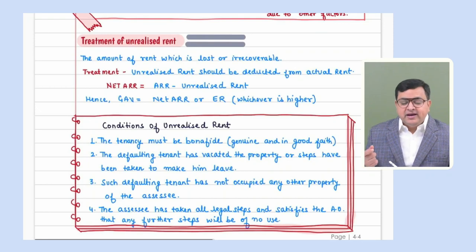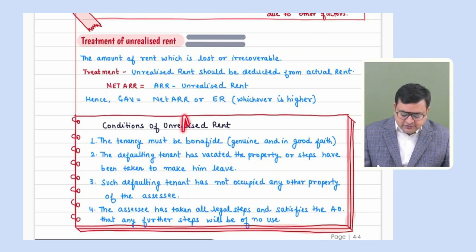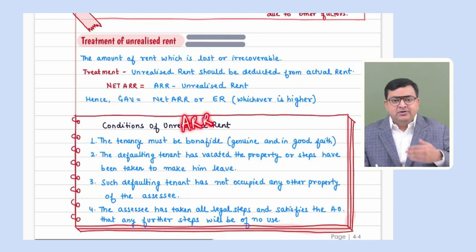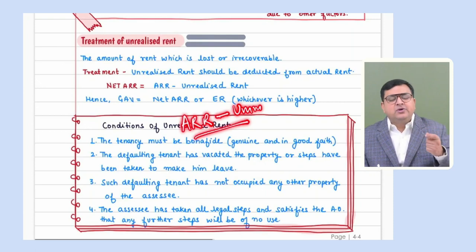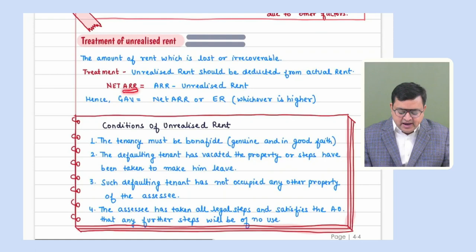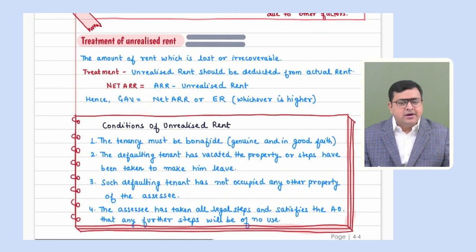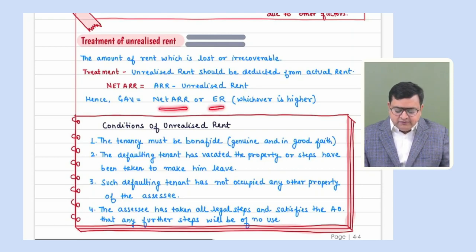So if there is unrealized rent, how do you treat it while computing house property income? From your actual rent received or receivable (ARR), just subtract that unrealized rent so that you get a net ARR. Then GAV would be: compare expected rent and net ARR — whichever is higher.